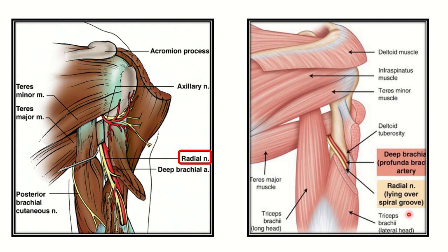This nerve supplies the triceps muscle, and we can see it is the radial nerve, which is present in the radial groove. In this radial group there is also the profunda brachii artery. These two contents — the radial nerve and the profunda brachii artery — are important. We can see the long, lateral, and medial heads, and the nerve running just below the triceps is the radial nerve, which supplies the triceps muscle.